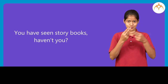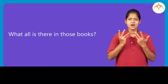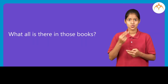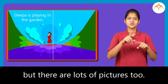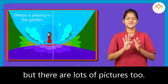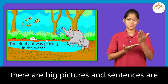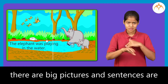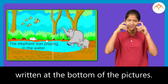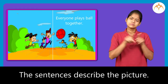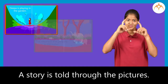You have seen storybooks, haven't you? What all is there in those books? A story is there, of course, but there are lots of pictures too. In some books, there are big pictures and sentences are written at the bottom of the pictures. The sentences describe the picture. A story is told through the pictures.